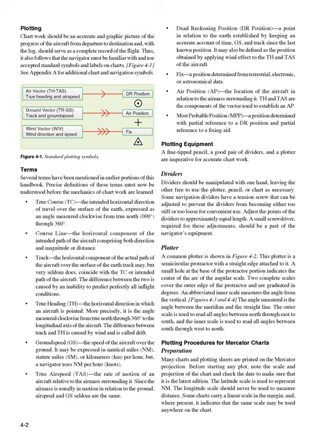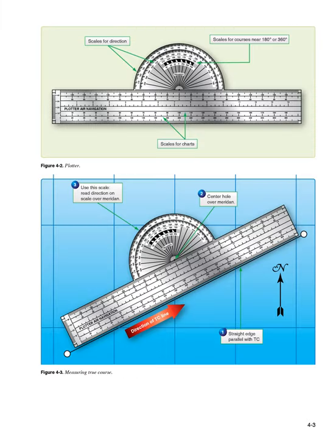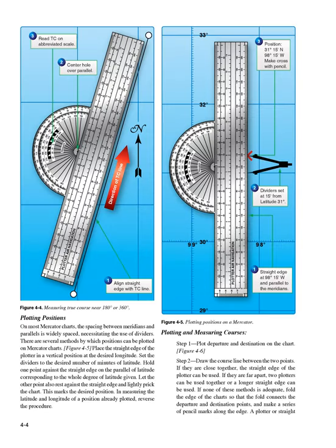The latitude scale is used to represent nautical miles. The longitude scale should never be used to measure distance. Some charts carry a linear scale in the margin, and, where present, it indicates that the same scale may be used anywhere on the chart. On most Mercator charts, the spacing between meridians and parallels is widely spaced, necessitating the use of dividers. There are several methods by which positions can be plotted on Mercator charts.